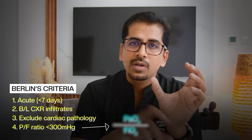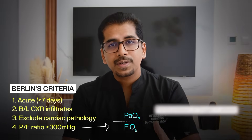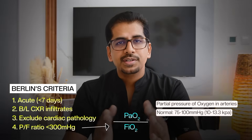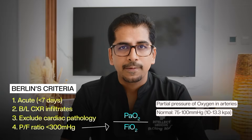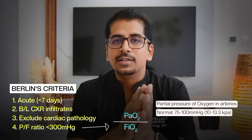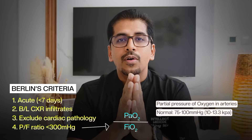Point number four — the most important one — is checking and estimating the PF ratio. PF ratio is PaO2 divided by FiO2. PaO2 is the partial pressure of oxygen in the arteries. The normal value is 75 to 100 mmHg, or 80 to 100 mmHg. This is in millimetres of mercury.